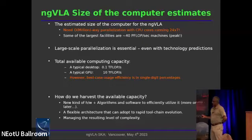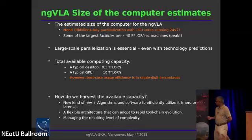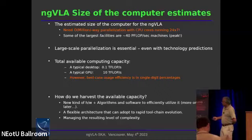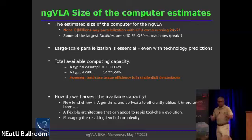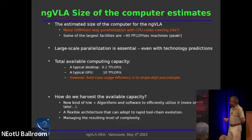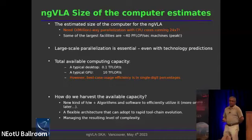The problem is that our efficiency of usage of available computing is very, very low — embarrassingly low, in the single-digit percentages. So the problem that needs a solution is: how do we increase our efficiency? The answers, arrived at through discussions with HPC experts and literature review, are that we need new kinds of hardware, new kinds of algorithms that utilize that hardware well, a flexible architecture, and a way to manage the resulting complexity.